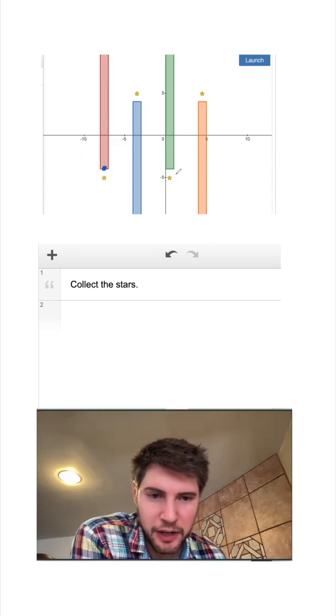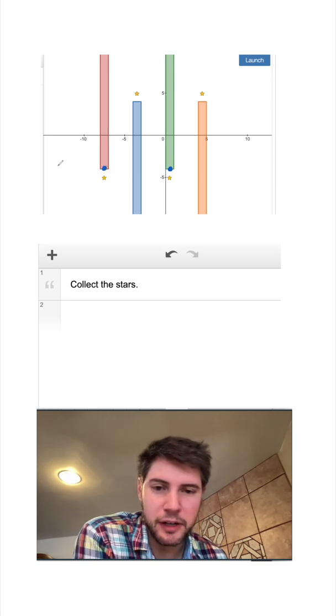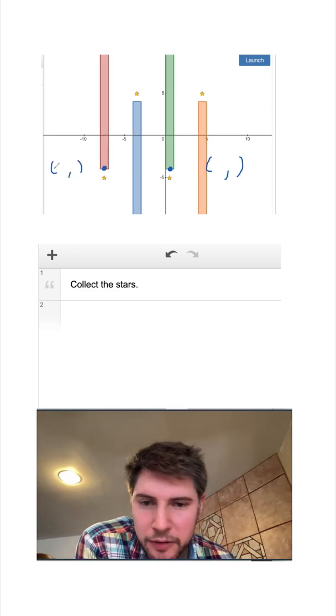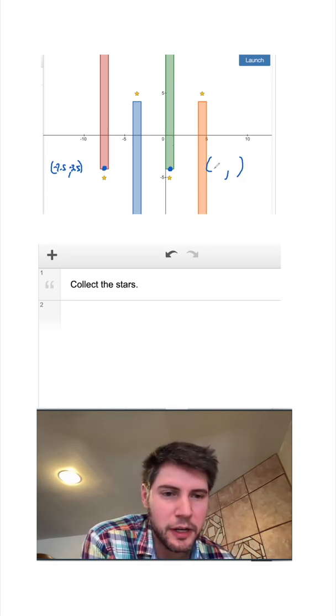I want the center of this circle to be about right here and the center of this circle to be about right here. Looks like negative 7.5, negative 3.5, and this center looks like about positive 0.5, negative 3.